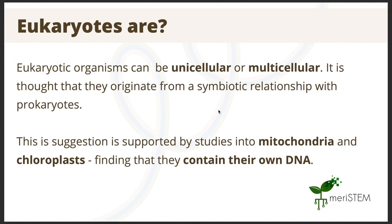Eukaryotic cells are quite different to prokaryotes. The first difference is that they can be either unicellular or multicellular. Research has put forward a symbiotic theory between prokaryotes and eukaryotes, based on mitochondria and chloroplasts containing their own DNA. It is thought that as they are genetically independent, these organelles were once prokaryotic beings.